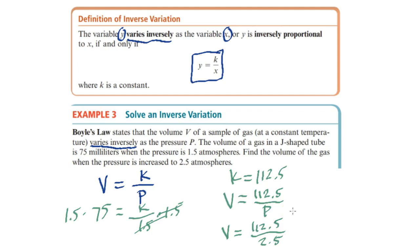And that gives us 112.5 divided by 2.5 is v equals 45. And remember your units, and that's milliliters.